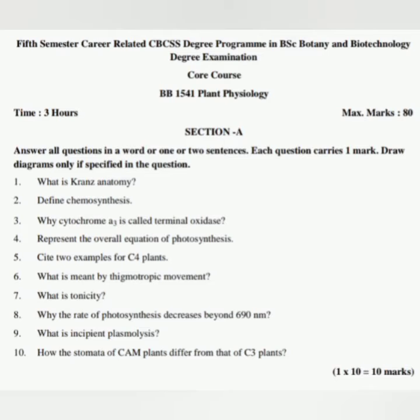Section A: Answer all questions in a word or one or two sentences. Each question carries one mark. Draw diagrams only if specified in the question. Question 1: What is Kranz anatomy? Question 2: Define chemosynthesis. Question 3: Why cytochrome a3 is called terminal oxidase? Question 4: Represent the overall equation of photosynthesis.